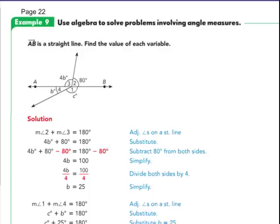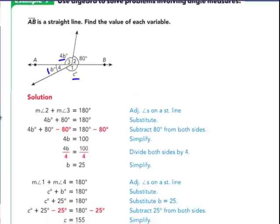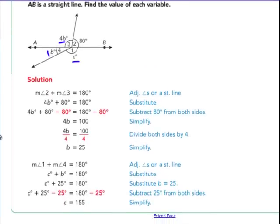AB is a straight line. Find the value of each variable. So now we've got a c, a b, and four b's. So measure of angle 2 and 3, these top ones, that's half of the arc, or half of the turn around the circle, so they equal 180. 2 and 3 equal 180. So 4b, which is angle number 3, plus 80, which is angle number 2, has to equal 180. Subtract 80 from both sides, divide by 4, and you get b is 25.